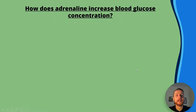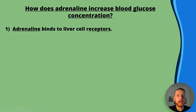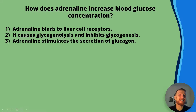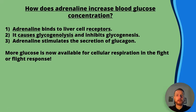How does adrenaline increase blood glucose concentration? Adrenaline is important in the fight-or-flight response to protect us from danger. Adrenaline binds to liver cell receptors, causes glycogenolysis — the splitting of glycogen — and inhibits glycogenesis, stopping the formation of glycogen. Adrenaline also stimulates the secretion of glucagon, so more glucose is available for cellular respiration. More glucose means more respiration, more ATP, faster muscle contractions — all useful in the fight-or-flight response.